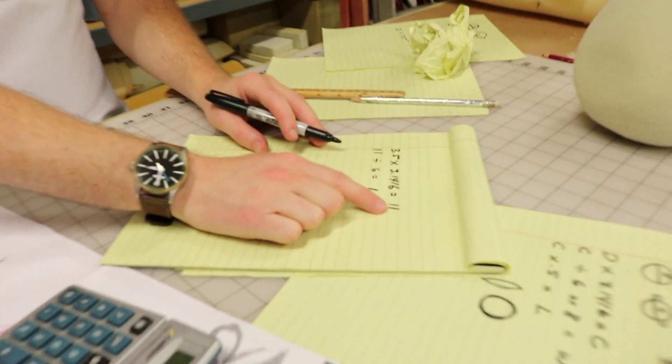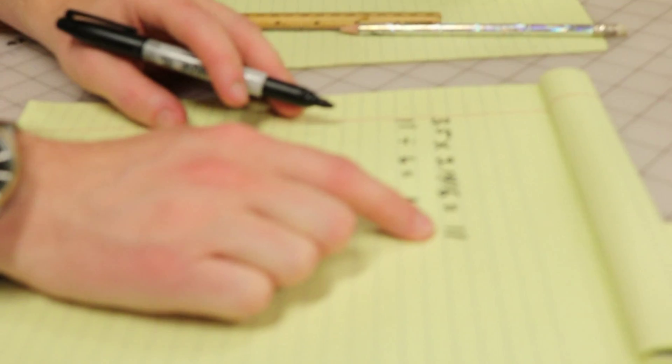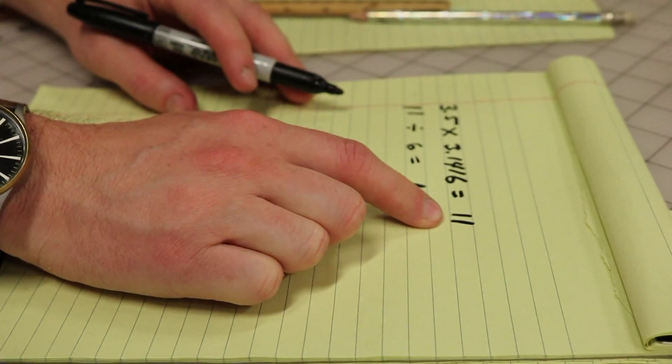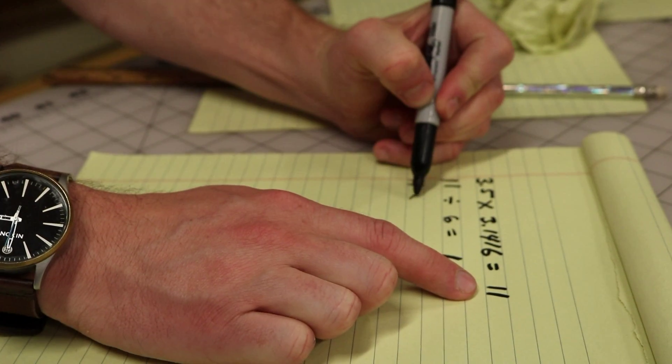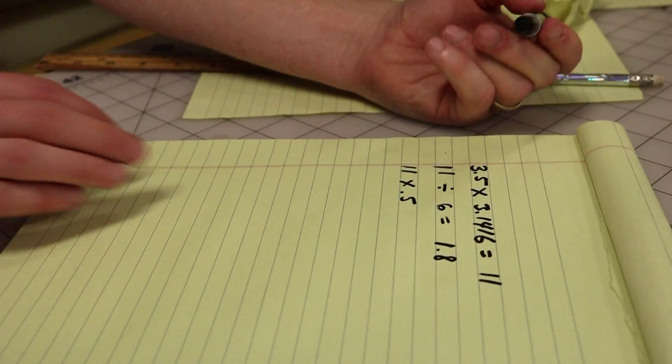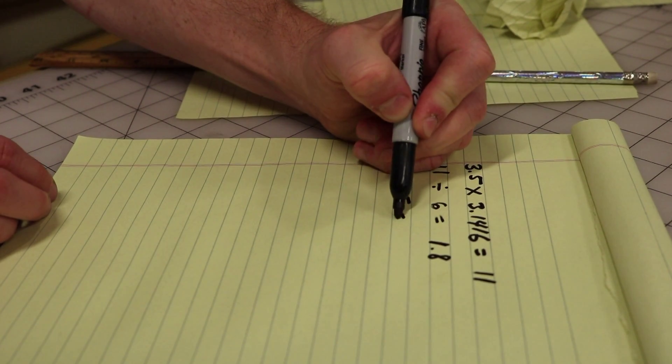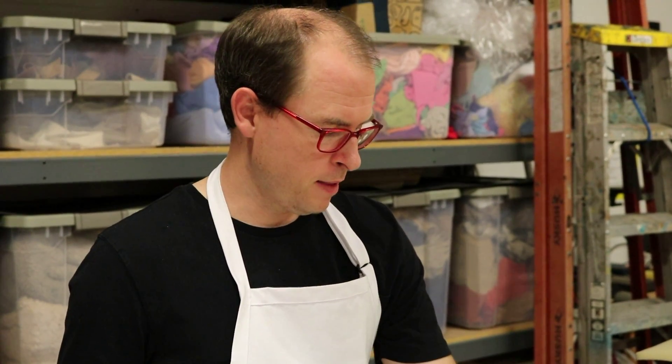We know the width of the petal. We need to know the length of the petal. So we take that circumference number 11 and we're going to times it by 0.5 to get the half. So we do 11 times 0.5 and that is 5.5.